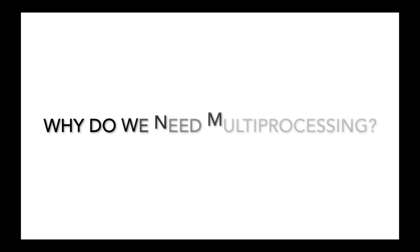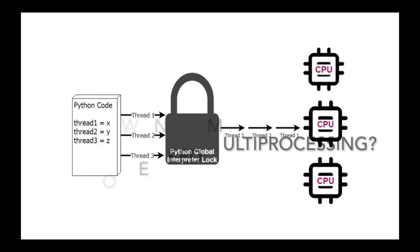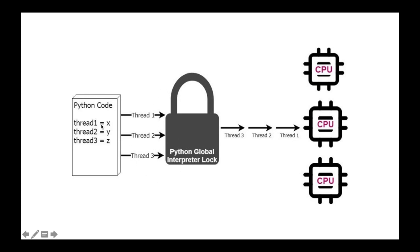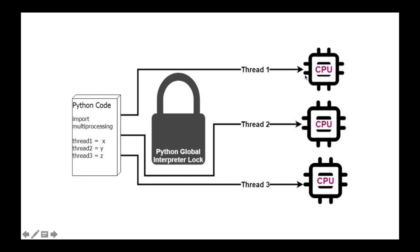Why do we need multiprocessing in Python? Multiprocessing sidesteps the Global Interpreter Lock, or GIL. The GIL was implemented in Python to handle a memory management issue, but as a result Python is limited to using a single processor. Due to this lock, Python code can execute only one thread at a time using one CPU. However, you can use multiprocessing to bypass this GIL and utilize all of your CPUs to run different processes.